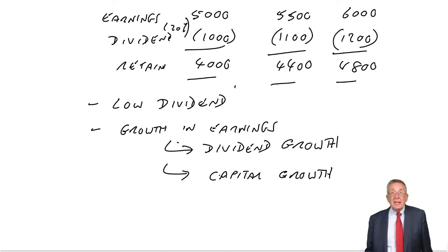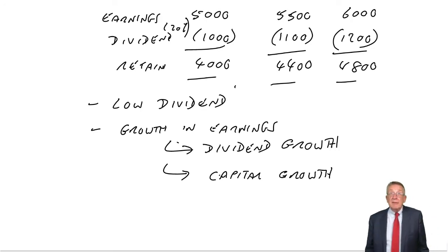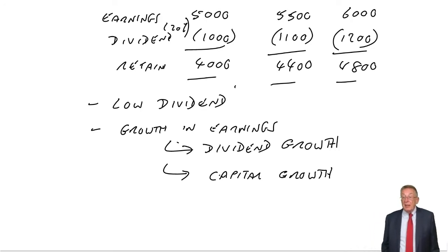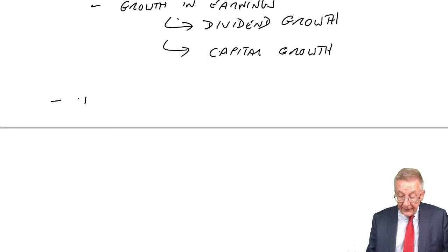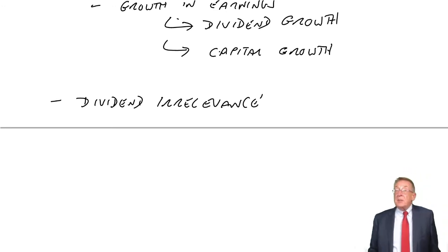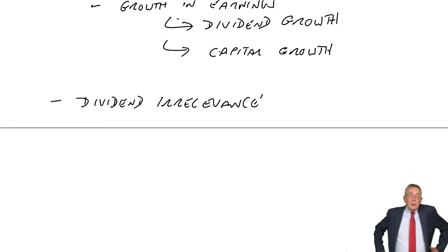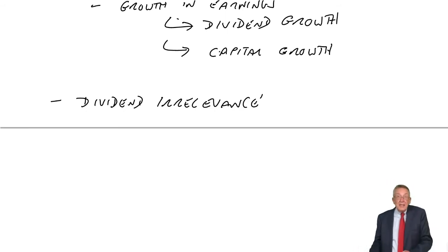And so that's why the company has to make a decision: shall we pay a high dividend and have little or no growth? Or shall we pay a lower dividend, in which case there will be growth and the share price will increase as well? Now, according to Modigliani and Miller, the decision is actually irrelevant — we call it dividend irrelevance — because Modigliani and Miller said that in theory, shareholders don't care.